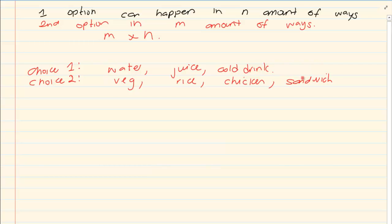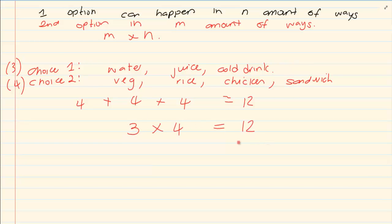So what did we do? We had four choices with the water, four choices with the juice, four choices with the cold drink. And all in all we ended up with 12 choices. But what if you simply said choice one had three options, choice two had four options. So if I said three times four, look, you come to the exact same answer.